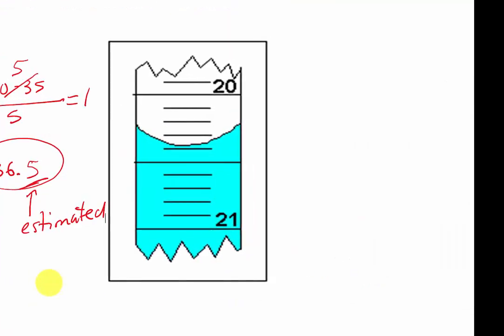Let's try another one over here. We have 21 to 20. Whoa, wait a minute. In some cases, when you have a burette, it's going to be reading the opposite. But we will still apply the same concept.